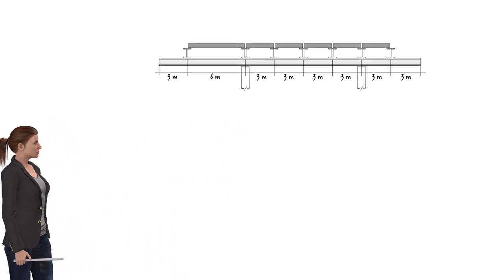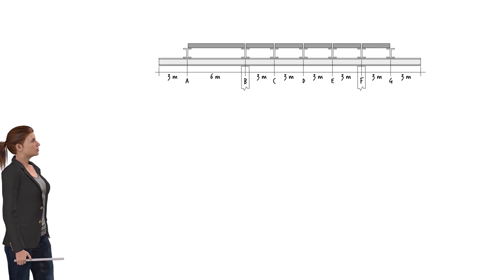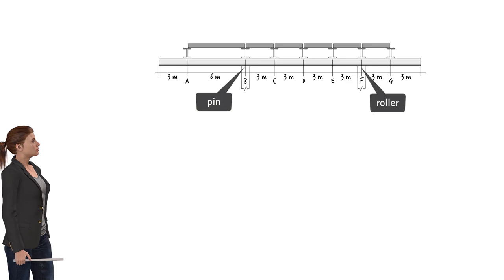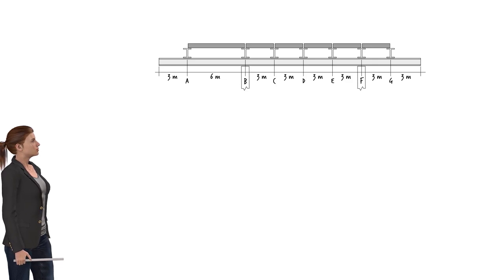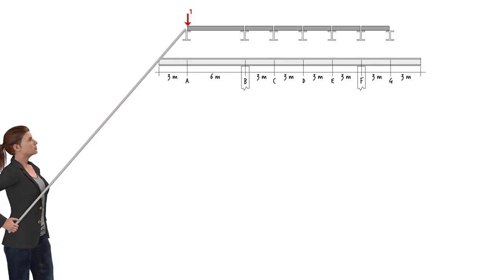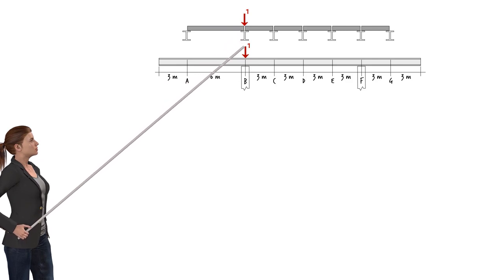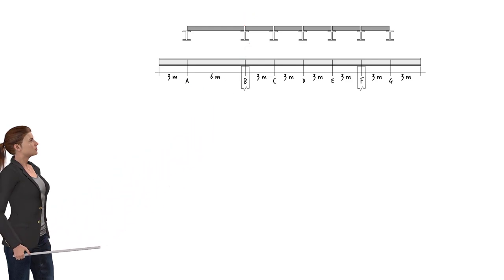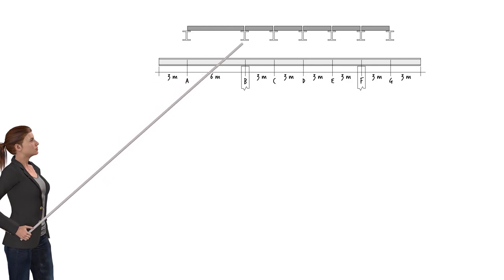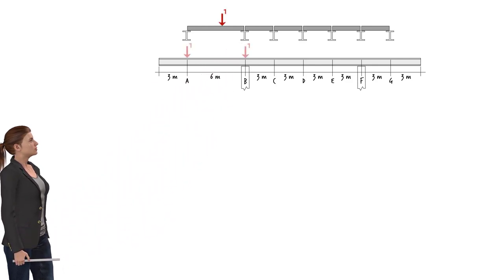Let's start by specifying the length of the girder, its support positions, and the positions of the load transfer points — the points at which the cross beams exert their influence on the girder. For this analysis, we treat the girder as a simply supported beam resting on a pin and a roller. Since there is a moving unit load on the floor, at one time or another a unit load will be exerted on the girder at each load transfer point. We can postulate that when the floor load is between two beams, the load on the girder is a linear combination of those two loading cases. We can employ the method of superposition to determine the effect of the moving floor load on the girder.